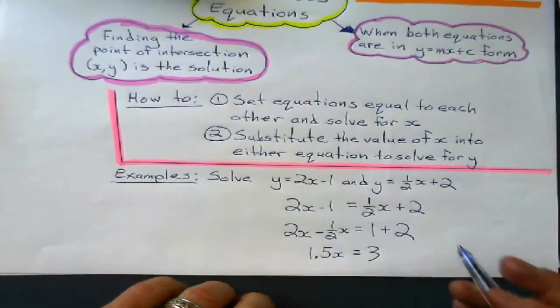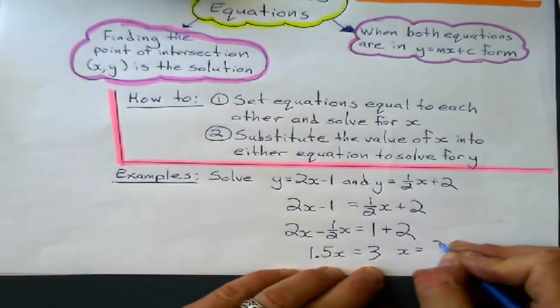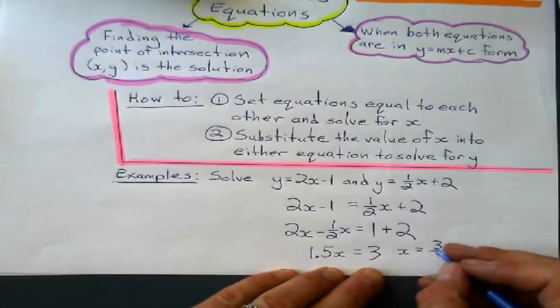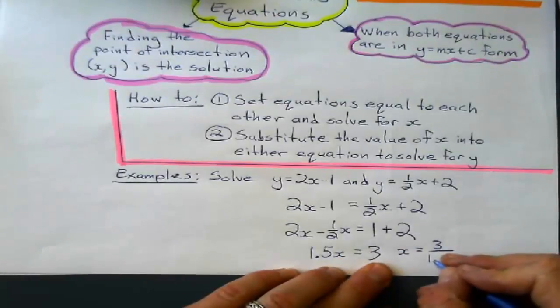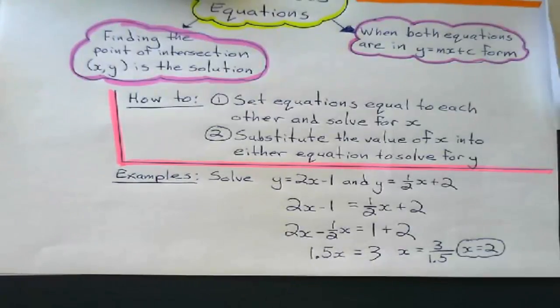To solve for x now, I divide by the coefficient. So, that means x equals 3 divided by 1.5. And so, that means the value of x is 2. That's half my solution.